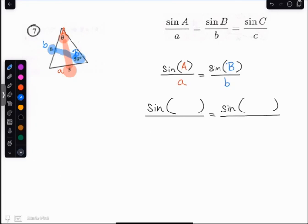Angle A is theta, that's what I'm trying to figure out. Side a is 5. And then sine of angle B, well angle B I decided was 59, and side b is 8.